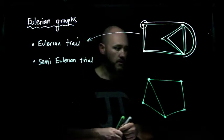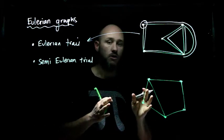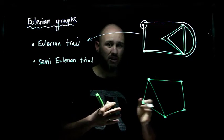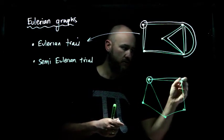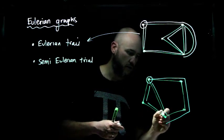A Semi-Eulerian Trail, on the other hand, like this one here, is where I can start on a vertex and I can complete the trail, but I don't finish on the same vertex. So let's say I start here, I want to go out, down, out, up, down, there, and I finish here.